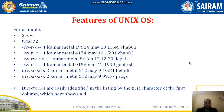Let me continue with the features of the Unix operating system. As I was discussing, using the ls -l command, we can display all 7 attributes of all the files present in the present working directory. Here, ls -l is providing a total of 72, meaning 72 files are present in the current working directory.